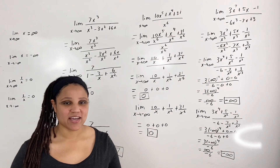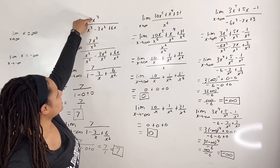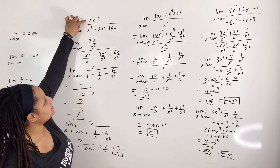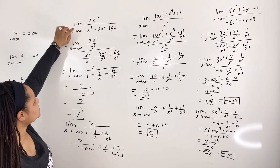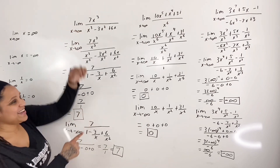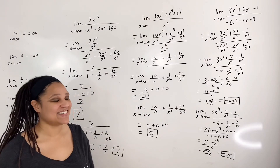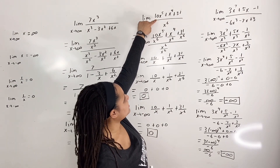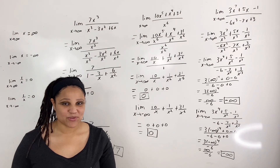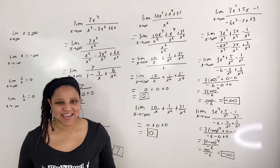Now let me give you a cool shortcut. In the first example, the degree of the denominator equals the degree of the numerator, so the result is the leading coefficient of the numerator divided by the leading coefficient of the denominator — that is 7 over 1, which equals 7 — and this is true for both positive and negative infinity. In the second example, the degree of the numerator is less than the degree of the denominator, so the limit as x approaches positive or negative infinity is always zero.